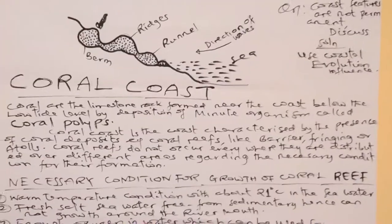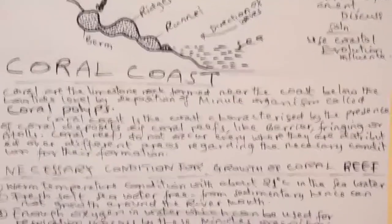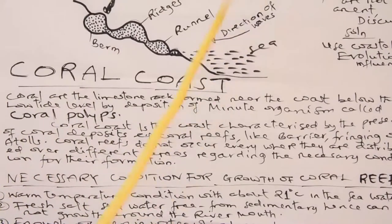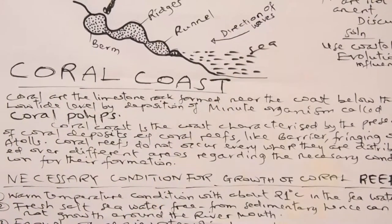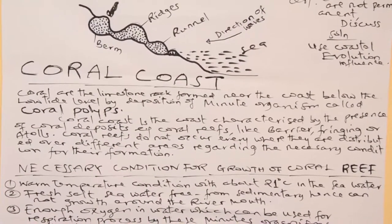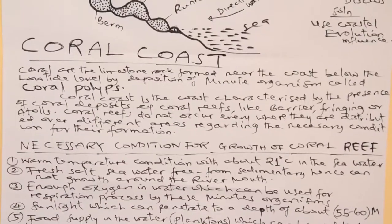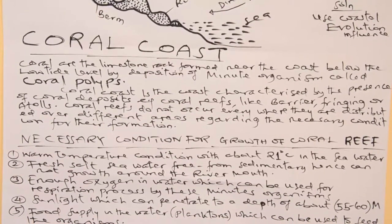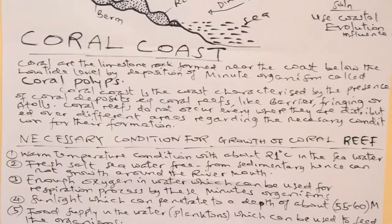Dear students, let's start another subtopic which belongs to the coast, which is called coral coast. This refers to the limestone rock formed near the coast, below the low tide level, by deposition of minute organisms called polyps.